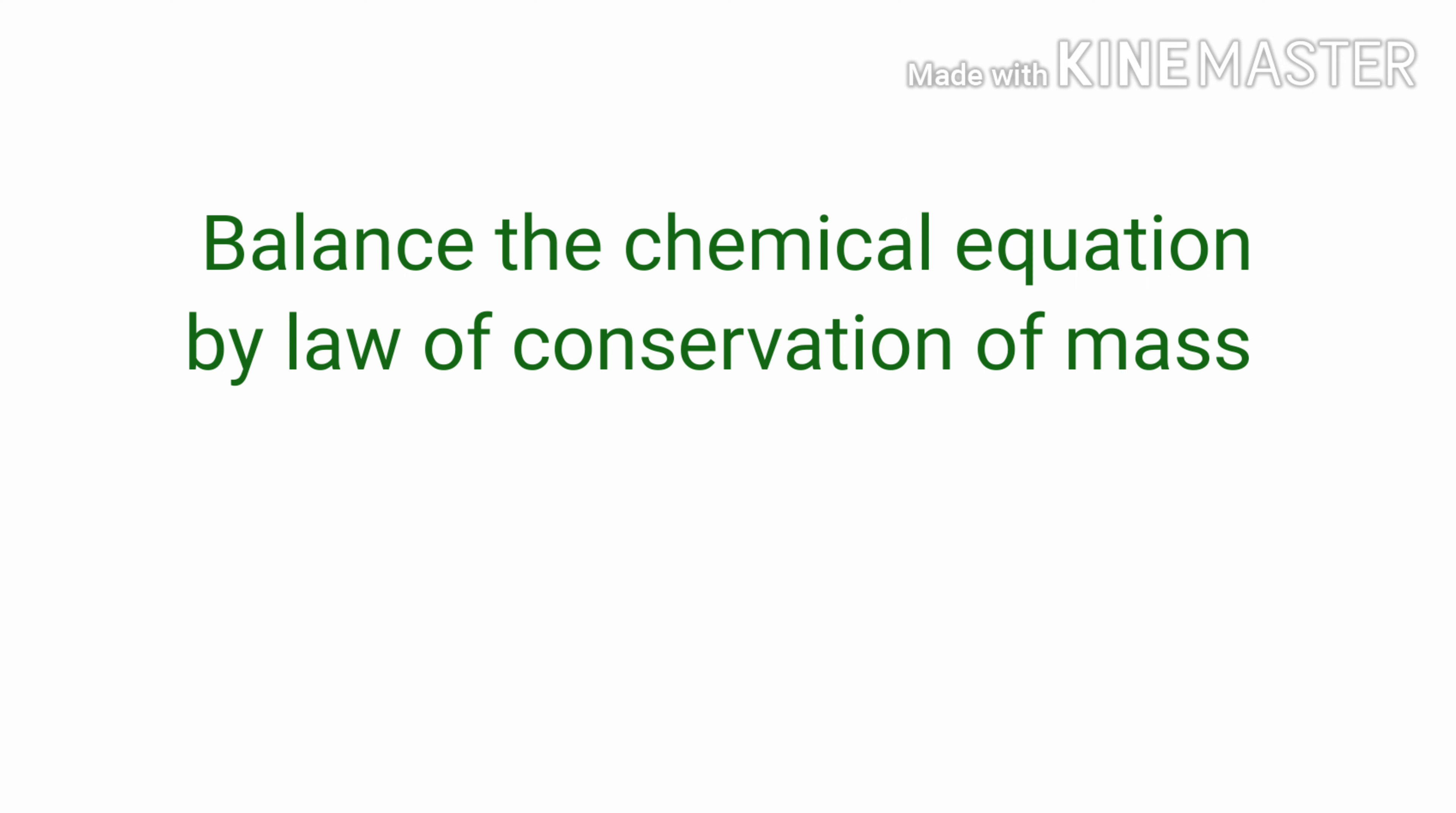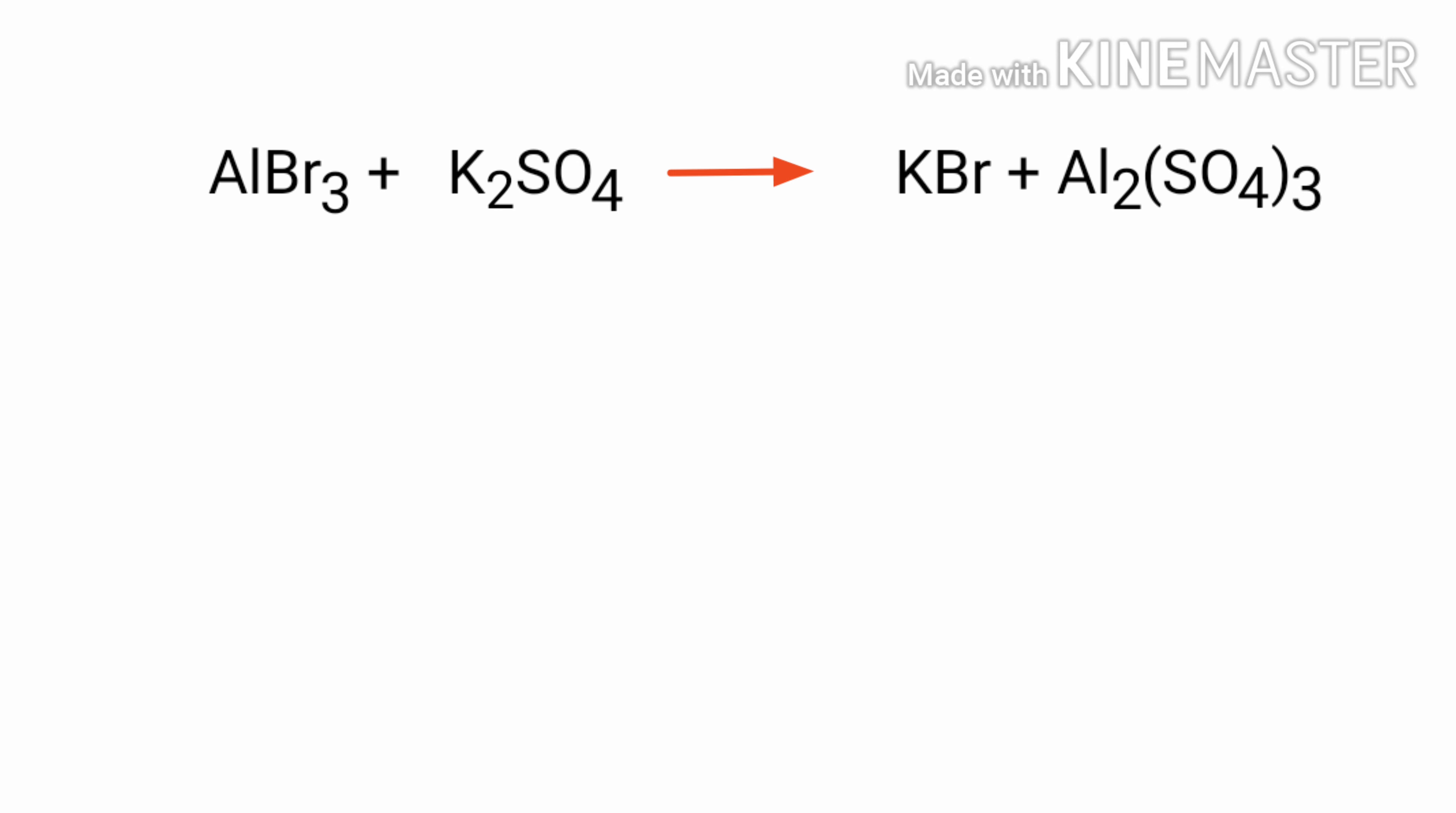Balance the chemical equation by law of conservation of mass. Aluminum bromide plus potassium sulfate gives us potassium bromide plus aluminum sulfate. In this equation, the reactants are aluminum bromide and potassium sulfate, and the products are potassium bromide and aluminum sulfate.